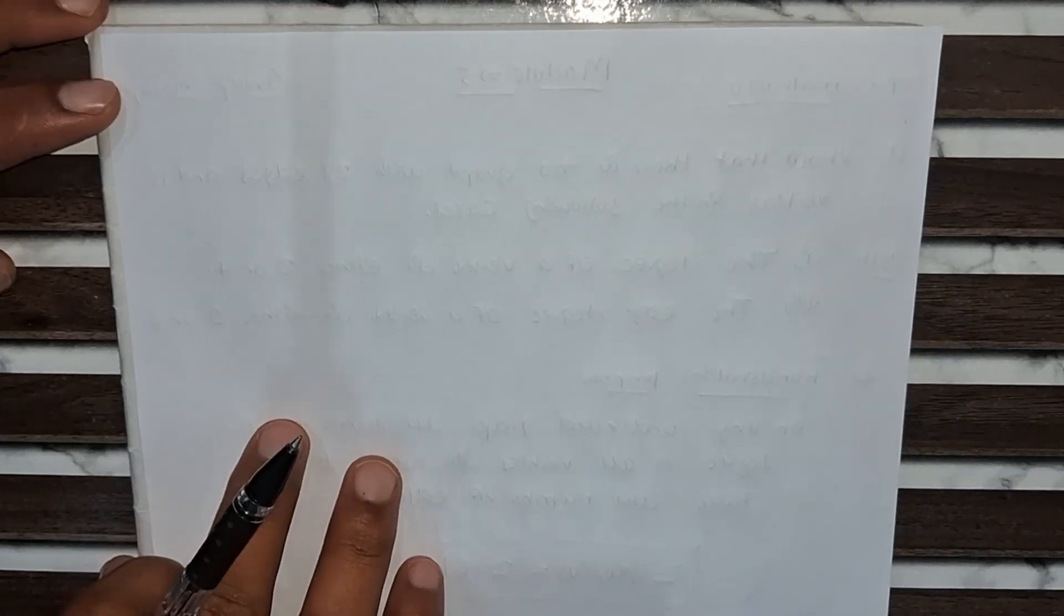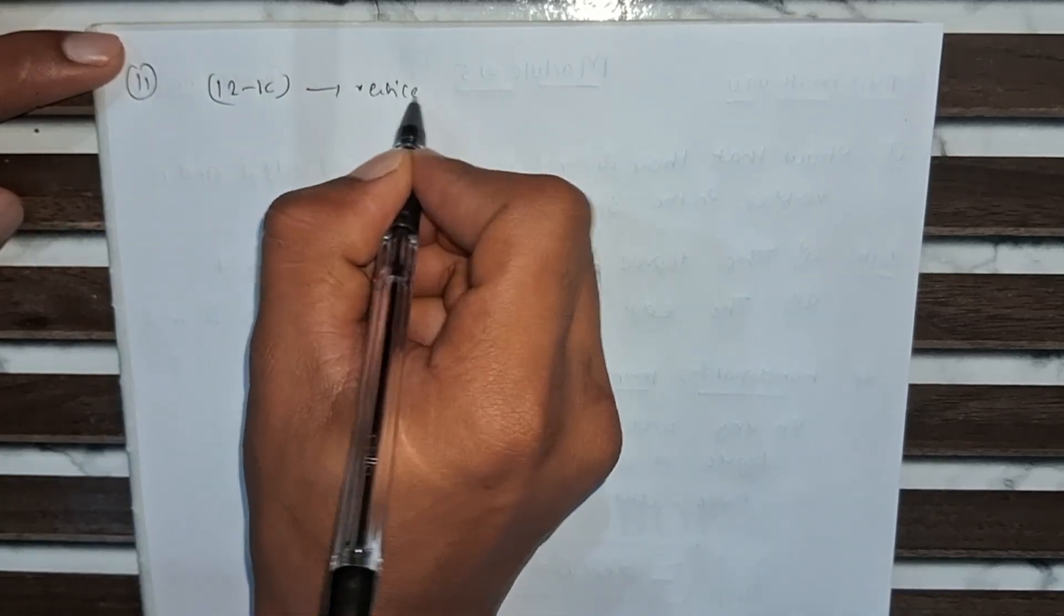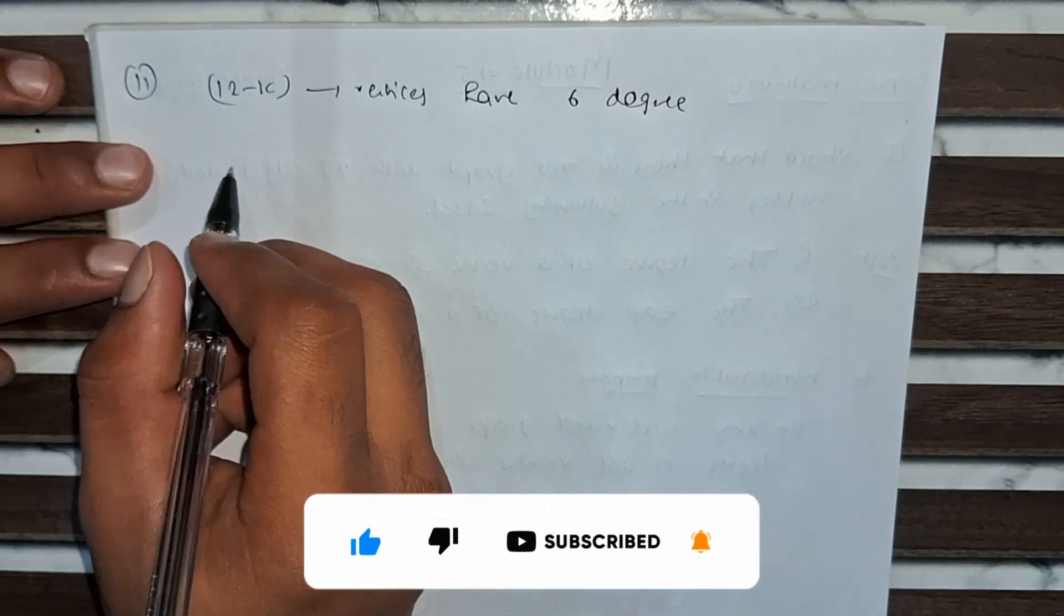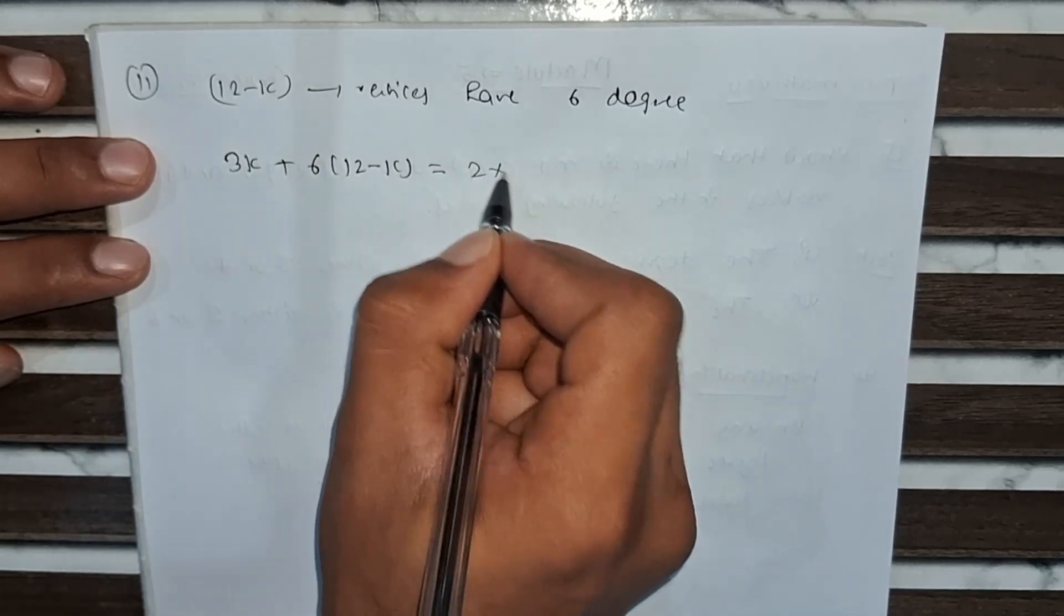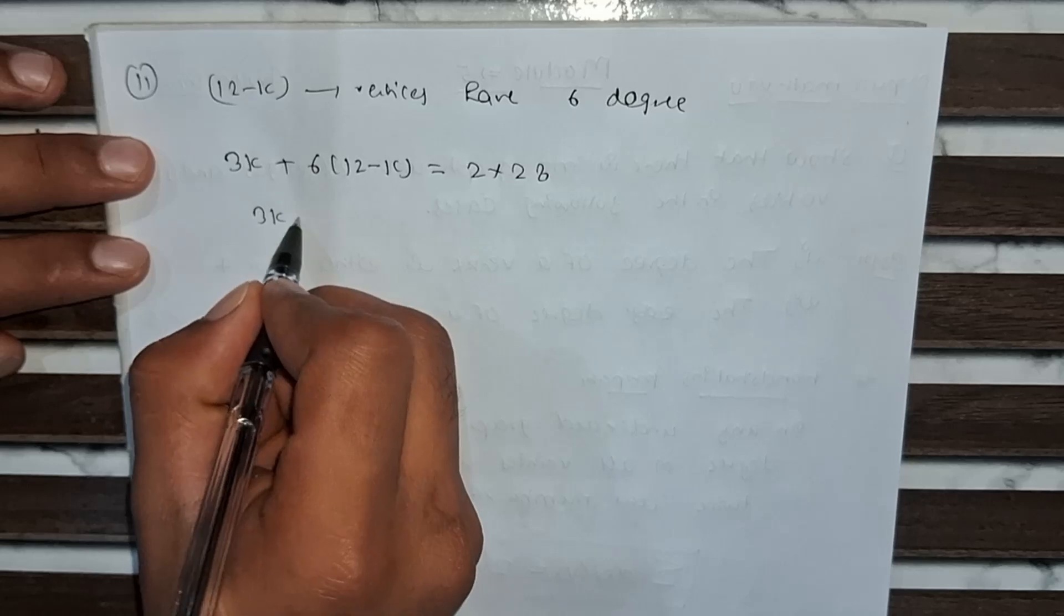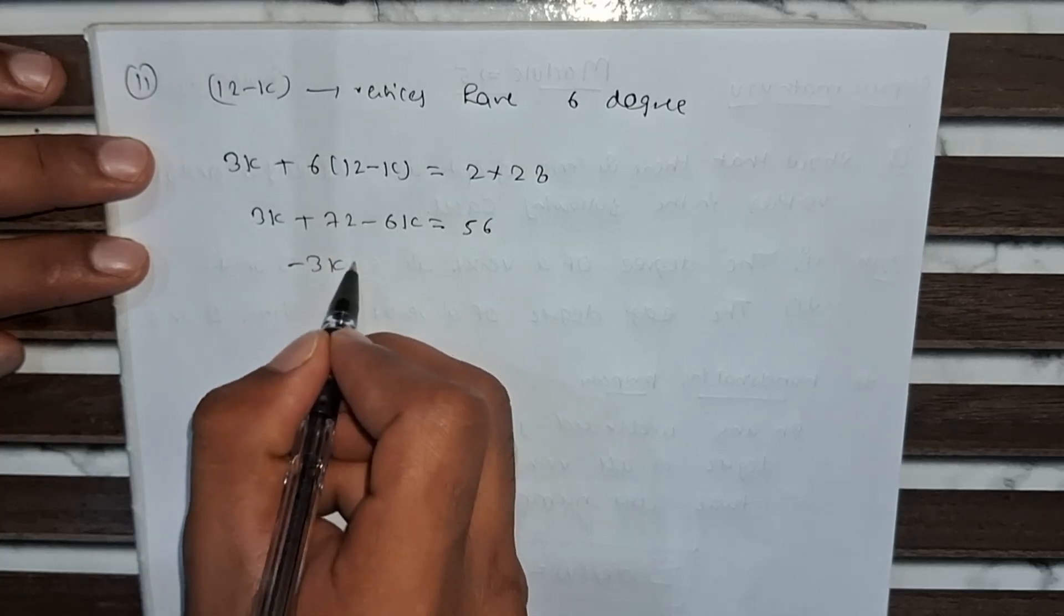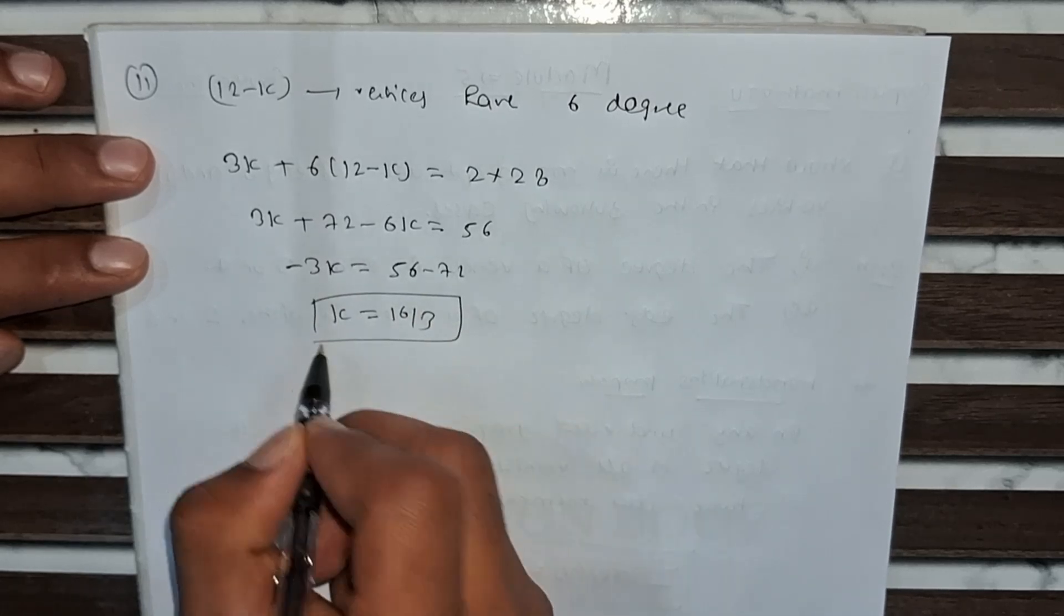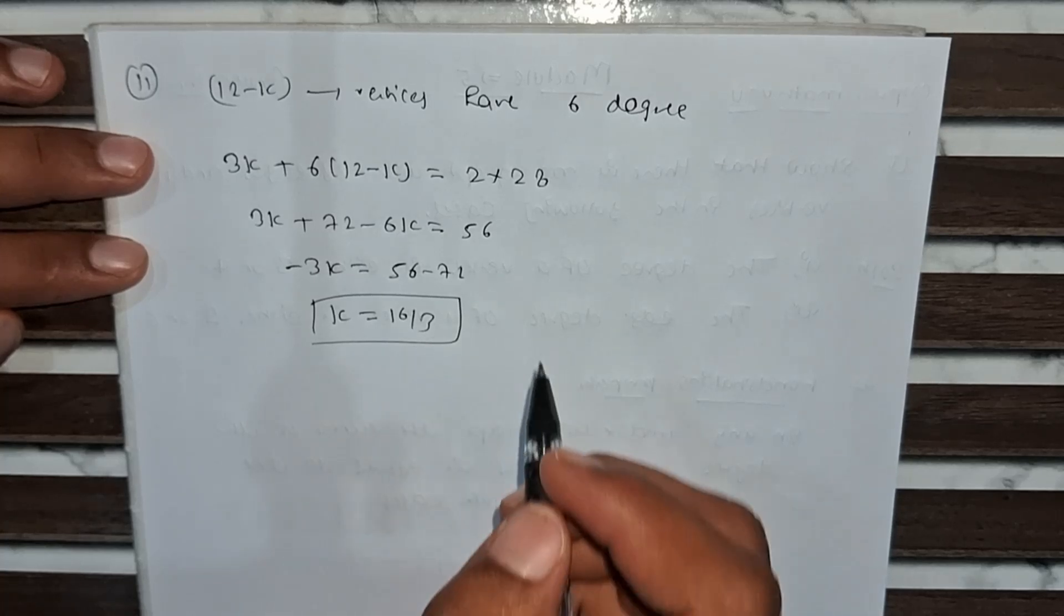So here the same case is happening. In the second case, 12 minus k have 6 degrees. So 3k plus 6 into (12 minus k) equals to 2 into 28, by the same property. So 3k plus 72 minus 6k equals to 56. So minus 3k equals to 56 minus 72, then k equals to 16 by 3. This is also not possible because k is non-negative or not in fraction. So this is the second part.